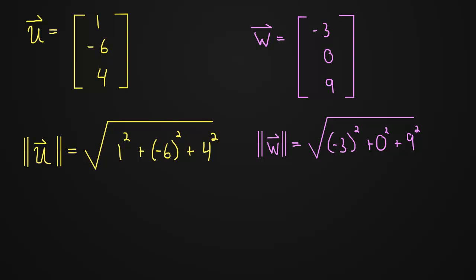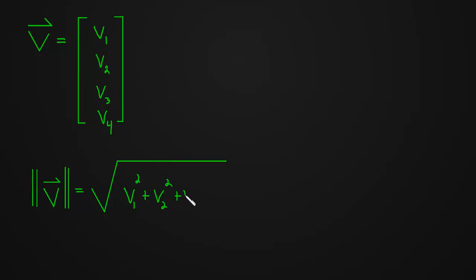If you're wondering what happens if you have more than three components, let me show you that quickly. And I might make a separate video about this, but let's say we had something like v is equal to v1, v2, v3, and v4, so now we have four components. The length of v, you might be able to guess what it's going to be. The length of a vector is the square root of v1 squared plus v2 squared plus v3 squared plus v4 squared.